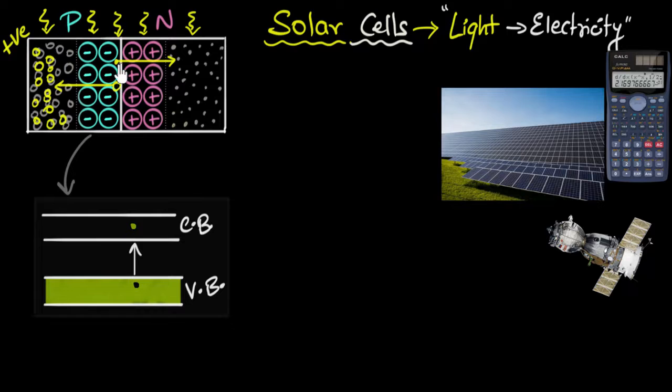Similarly, electrons are getting accelerated over here and they get piled up over here. And as electrons get piled up over here, this side becomes negative. And so this side gets negative charge. And now notice a voltage is generated between these two sides.